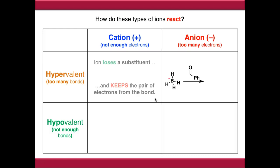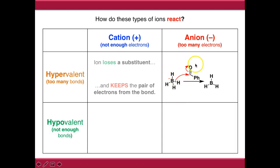This is a classic borohydride reduction. Borohydride really wants to lose a substituent, but it needs to lose it with a pair of electrons. So we push the B-H bond onto an aldehyde, which neutralizes our borohydride back to borane again, and as a result we have now created a hypovalent anion.